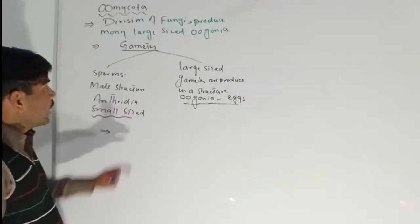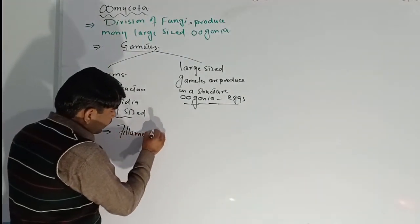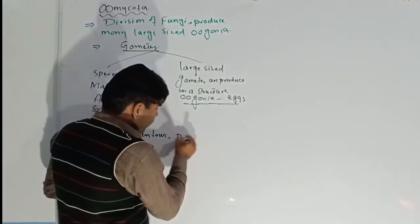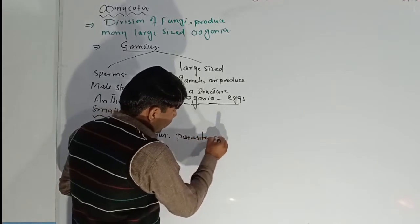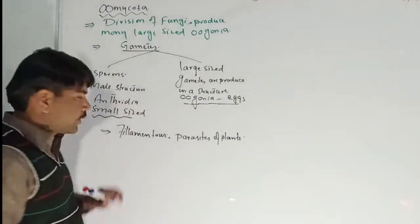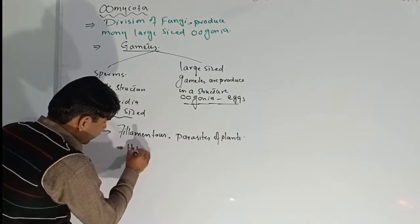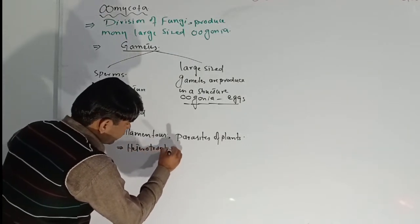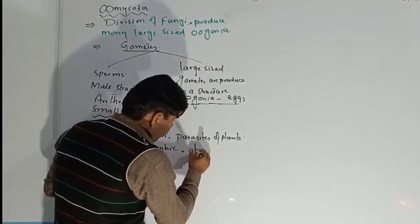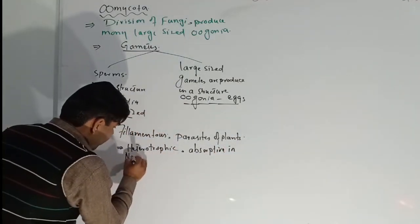The fungi belonging to this division are filamentous. These are parasites of plants and are also present on decaying plants. They are heterotrophic and absorptive in nature.